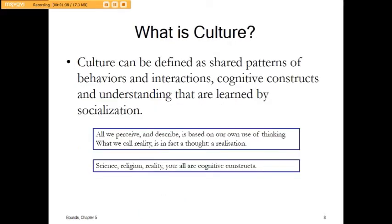Culture can be defined as shared patterns of behavior and interactions — cognitive constructs and understanding that are learned by socialization. We perceive and describe everything based on our own thinking; this becomes our reality. Things such as social science and religion all make up our cognitive constructs — these are convenient ways to help us understand the world, sort of like a shorthand.